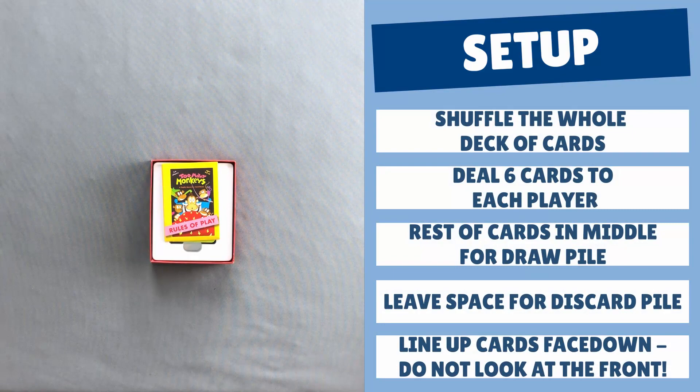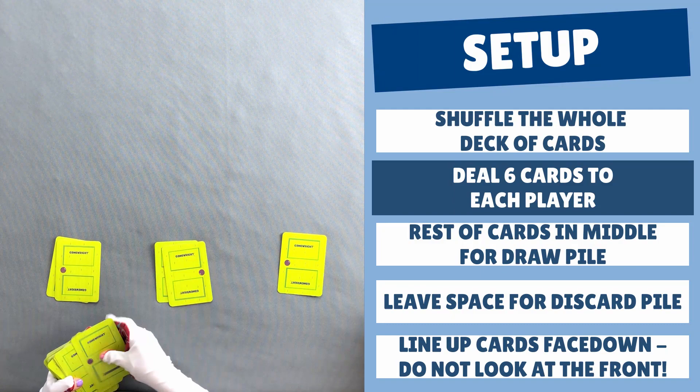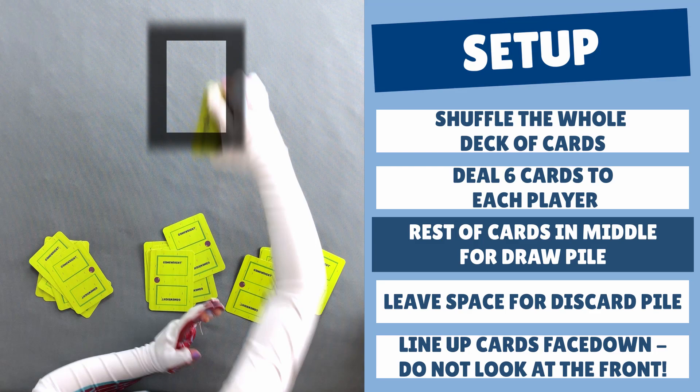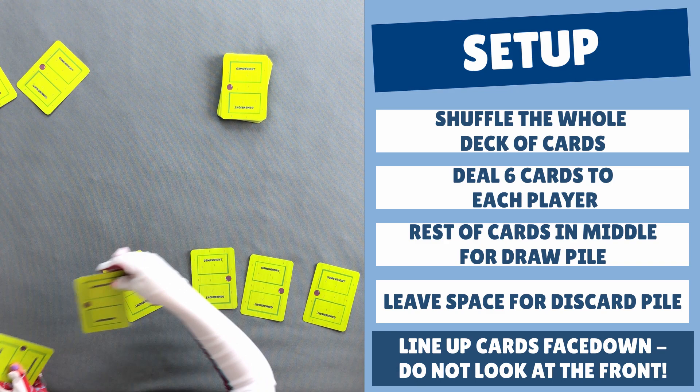Setup is really easy. Shuffle the whole deck of cards. Then deal six cards face down to each player. Put the rest of the cards in the middle of the table for the draw pile. Leave a spot next to it for discard pile too. Then each player should line up their six cards in front of them. Leave them face down. Do not look at the front of the cards. And now I'm ready to play!